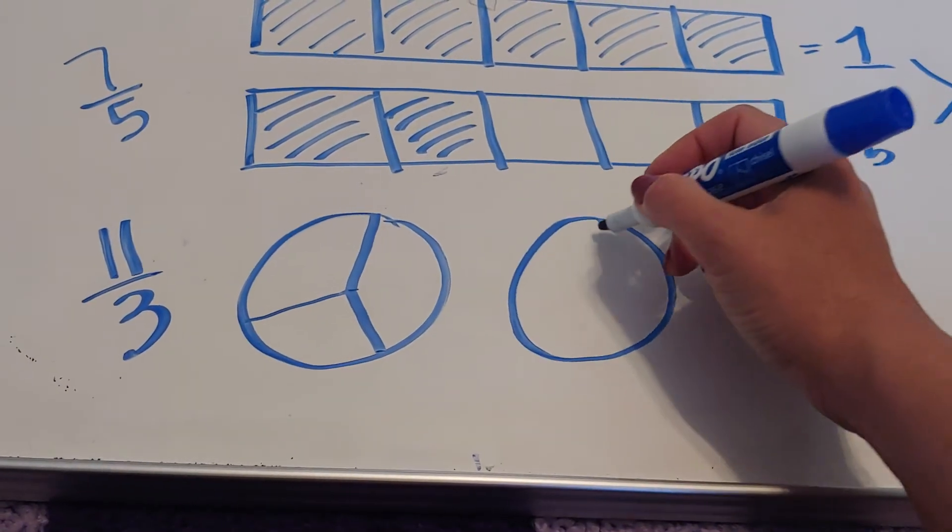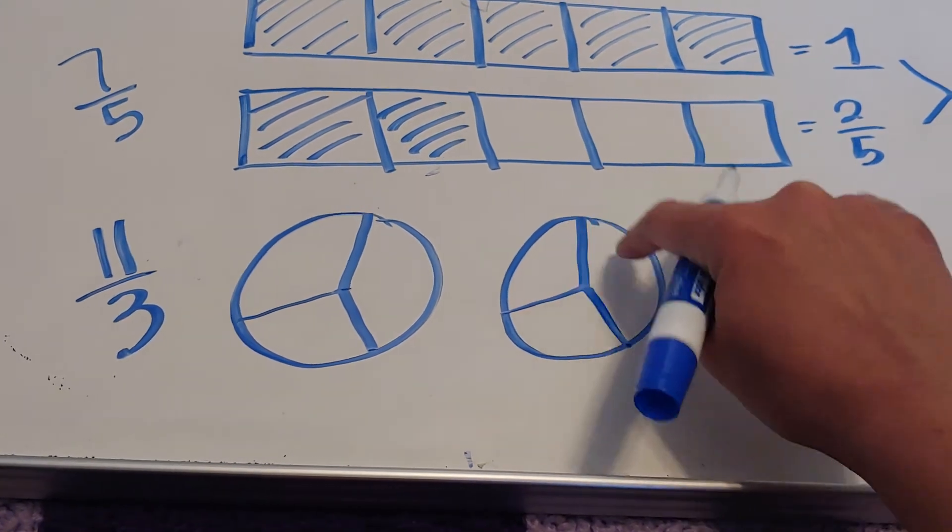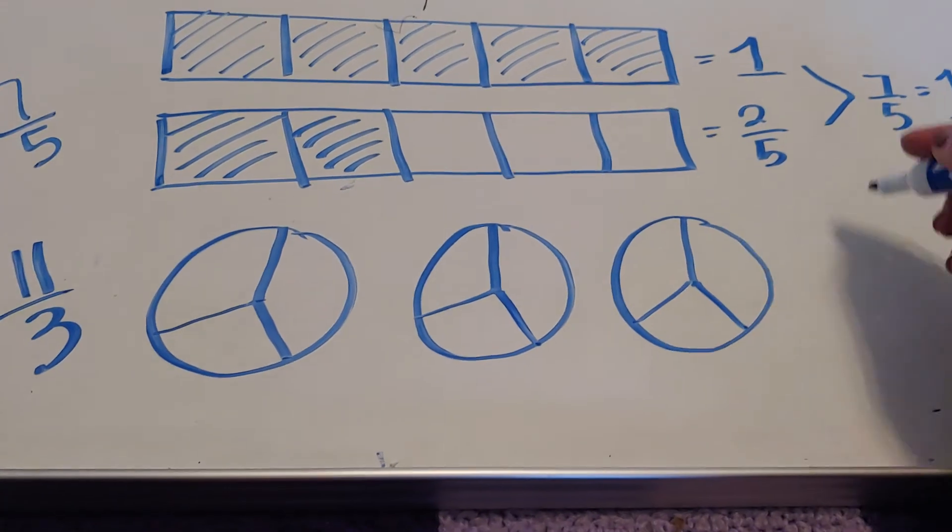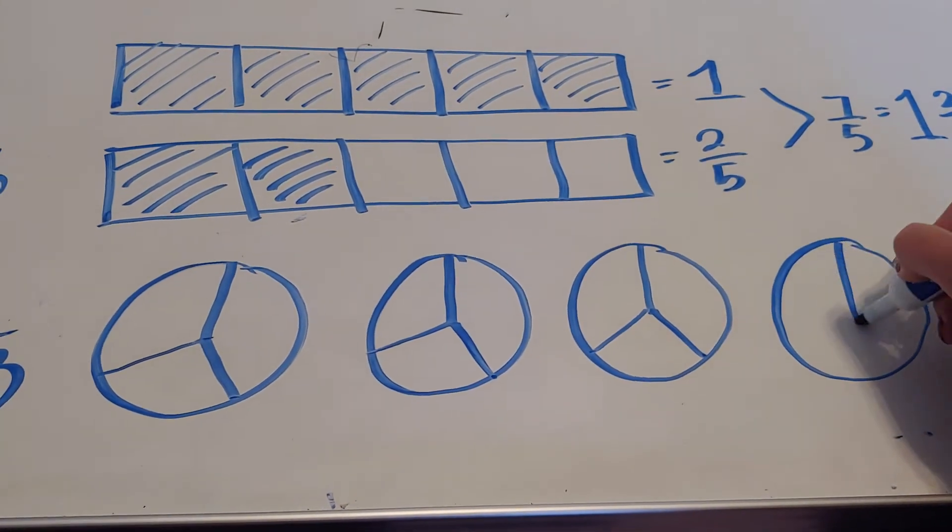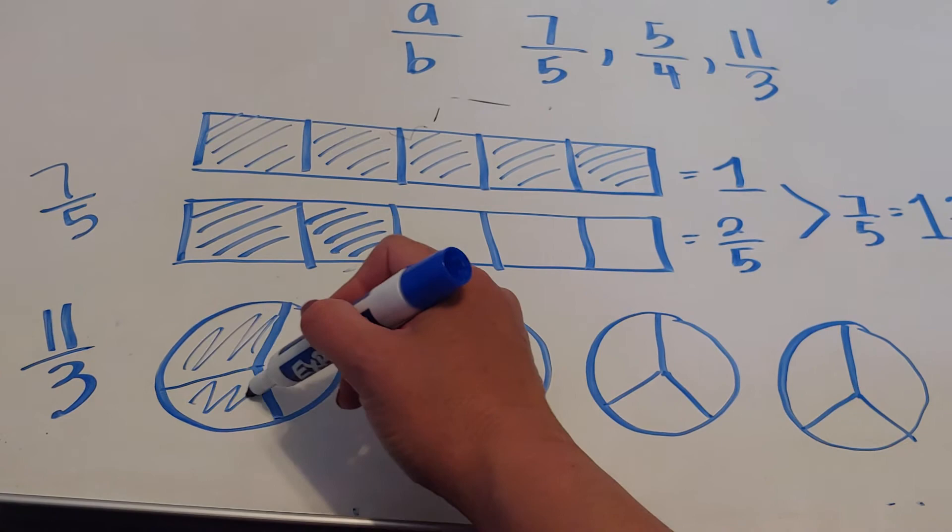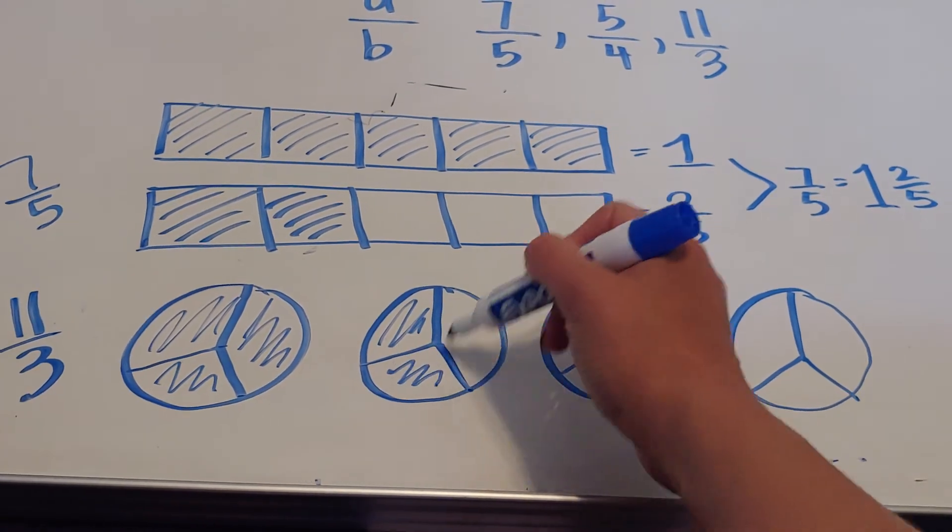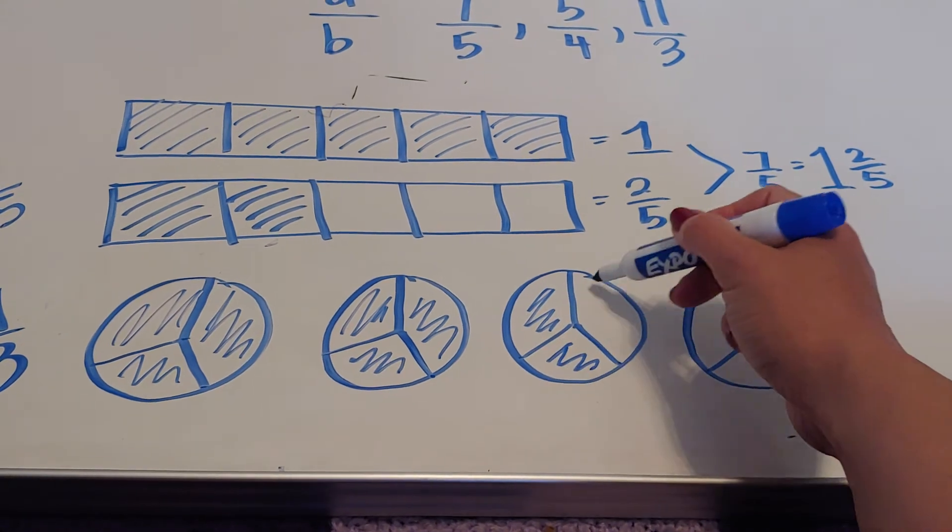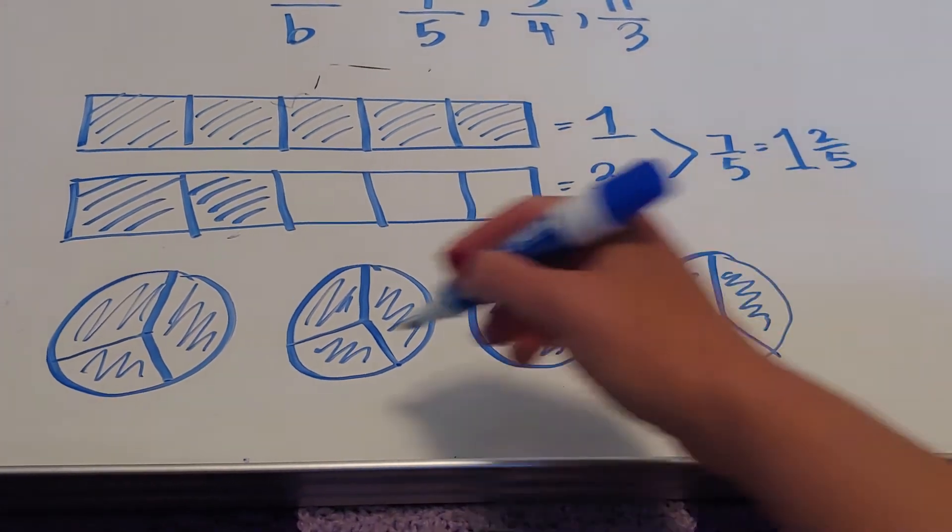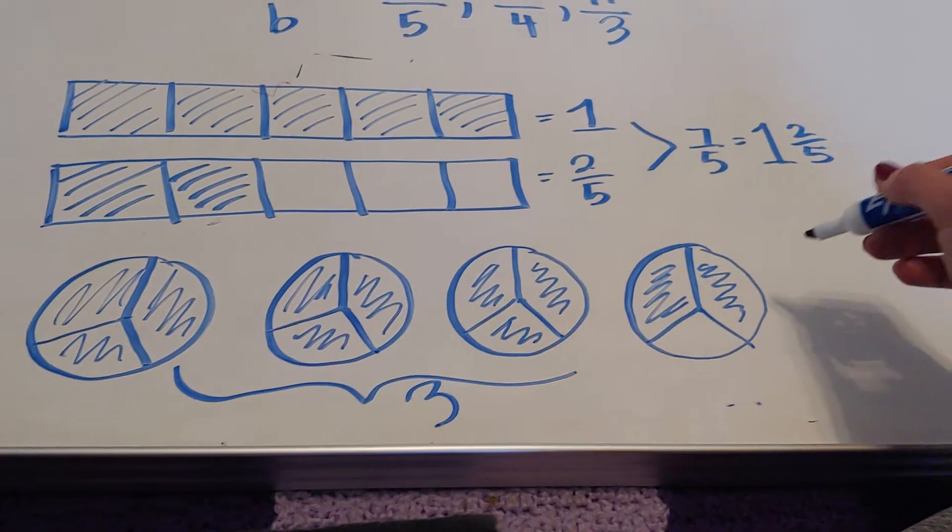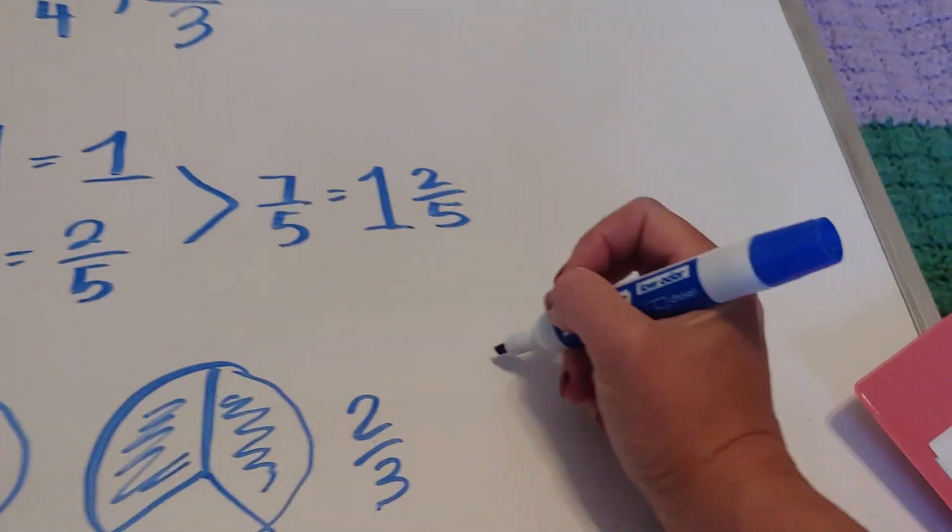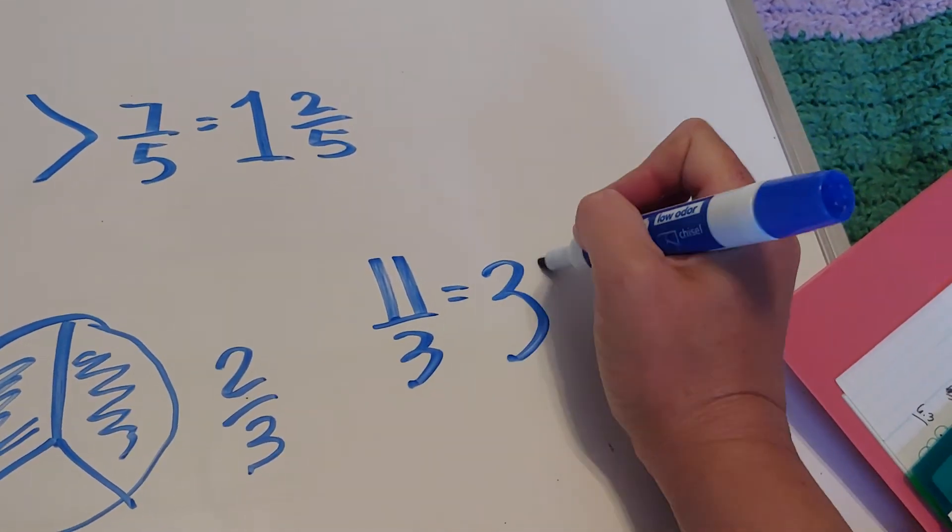So I need to shade 11 of them. So 1, 2, 3, 4, 5, 6, 7, 8, 9, and I still need 2 more to go. So 11 thirds would be, I'm going to now shade 11. And what I get is that I have 3 whole shapes and 2 thirds of another. So 11 thirds is the same thing as 3 and 2 thirds.